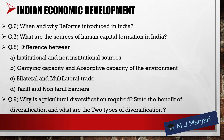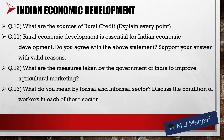Question 9: Why is agricultural diversification required? State the benefits of diversification and what are the two types of diversification? Question 10: What are the sources of rural credit? Explain every point. Question 11: Rural economic development is essential for Indian economic development — do you agree with the above statement? Support your answer with valid reasons. Question 12: What are the measures taken by the government of India to improve agricultural marketing?